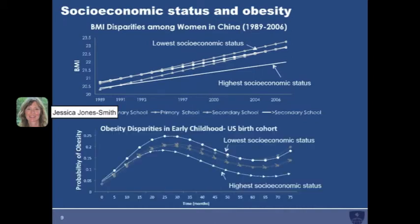In the US, I'm using data from a nationally representative survey called the Early Childhood Longitudinal Study in order to examine how early in life these socioeconomic disparities in overweight risk begin to emerge. I find so far that for white, Asian, and Latino children, by age three to four years those with lower socioeconomic status begin to experience a higher risk of overweight.